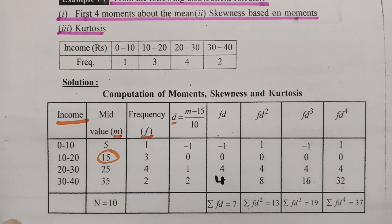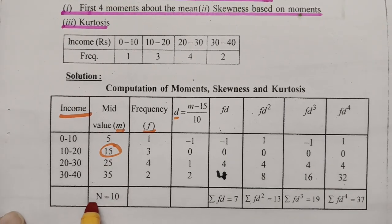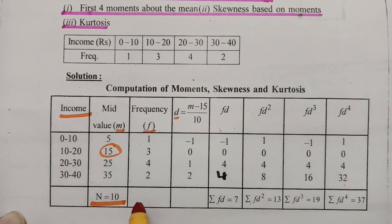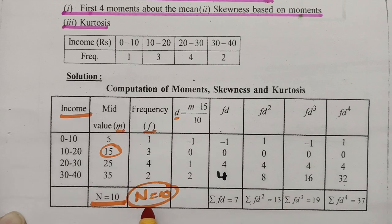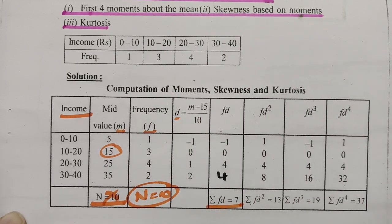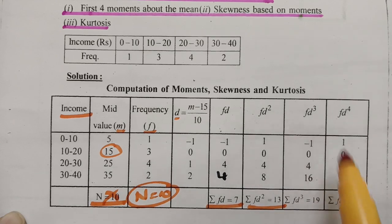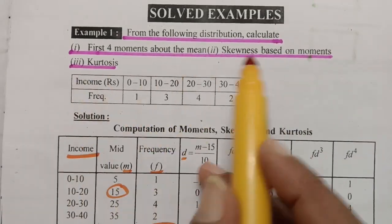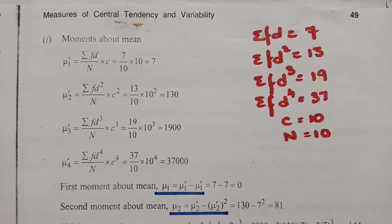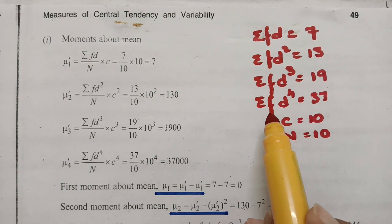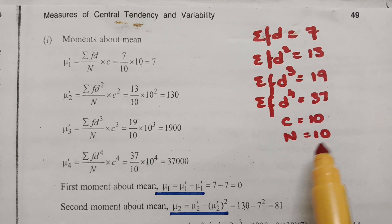After summing all values, the total frequency n = 10. The summation results are: Σfd = 7, Σfd² = 13, Σfd³ = 19, Σfd⁴ = 37. The length of the class interval c = 10.